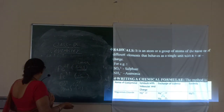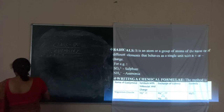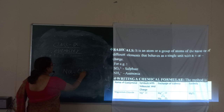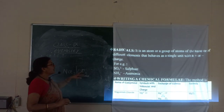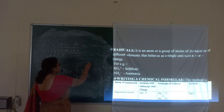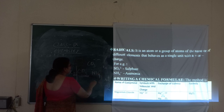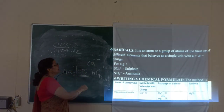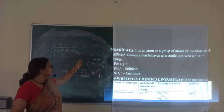Next one is radical. When you are writing the chemical formula, you are finding that the first part is the metallic part and the second part is the non-metallic part. When writing Na2CO3, this part is coming under radical. Radical means a group of atoms having a single charge, that may be positive or negative. For example, NH4+ is a positive radical, and CO3 2- means carbonate is having two negative charges. These are called radicals.